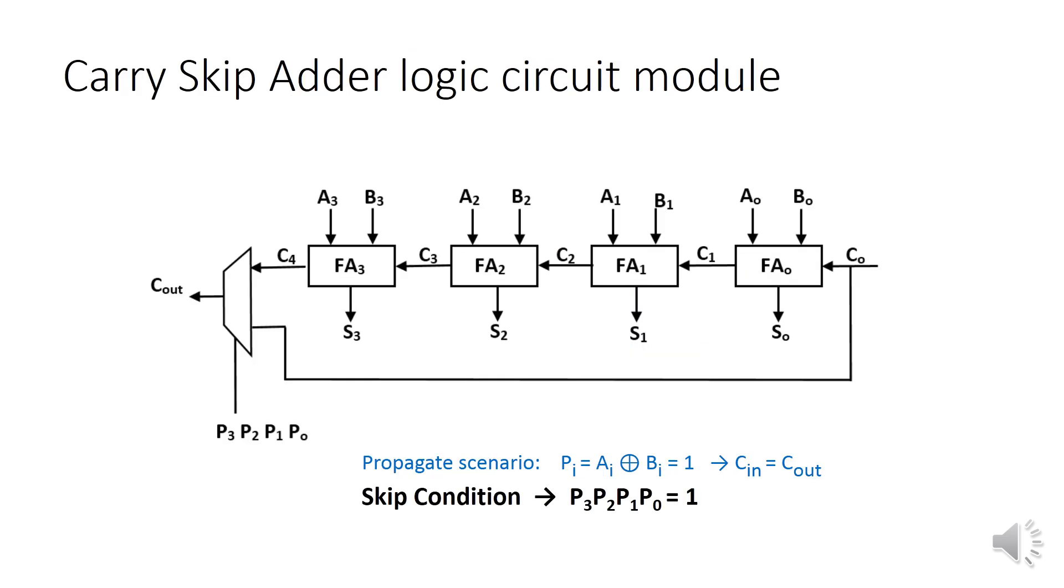The bypass line delineated in the circuit module represents the propagate condition. If all the P's are 1, then the multiplexer opens the bypass line.